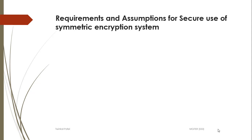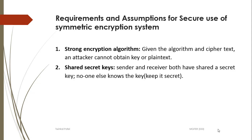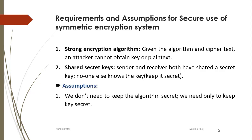We will now see the requirements and assumptions for secure use of a symmetric encryption system. There are some requirements: we need a strong encryption algorithm, such that the attacker cannot identify the key or the plaintext. Additionally, the sender and receiver must both share a secret key that no one else knows. An assumption is that we don't need to keep the algorithm secret — the cipher is publicly known — and that a secure channel is available for distribution of the secret key.